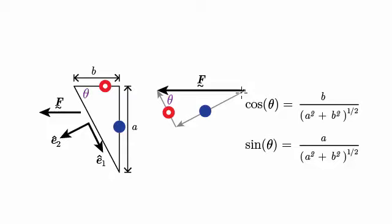Starting at the base of f, I've got something in the ê₂ direction, and then I've got something in the ê₁ direction — or minus ê₁ direction — like that. These two vectors are tip to tail, so they add up to f.